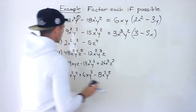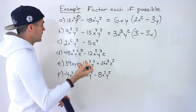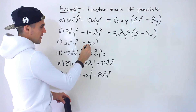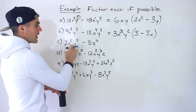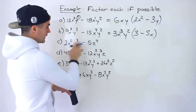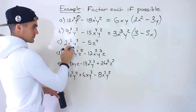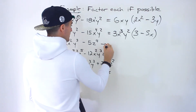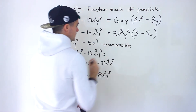Moving on to part C: 2x squared y cubed minus 5z to the 4. Starting with the integers 2 and 5 — no common factor. Over here we have x and y, but over here we have z. There are no common variables across both expressions — no x or y in the second term, no z in the first. So overall we cannot factor this expression. It is not possible to factor.